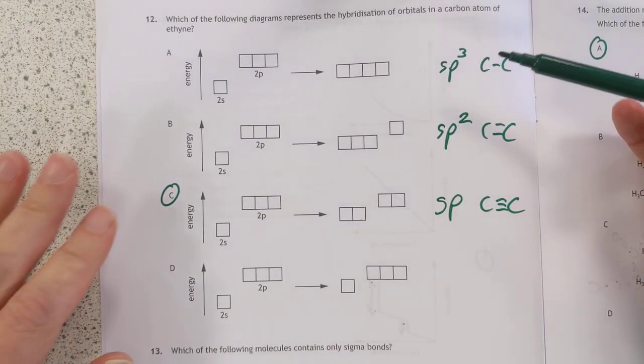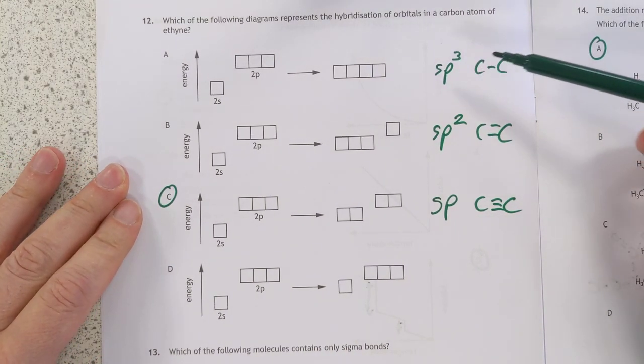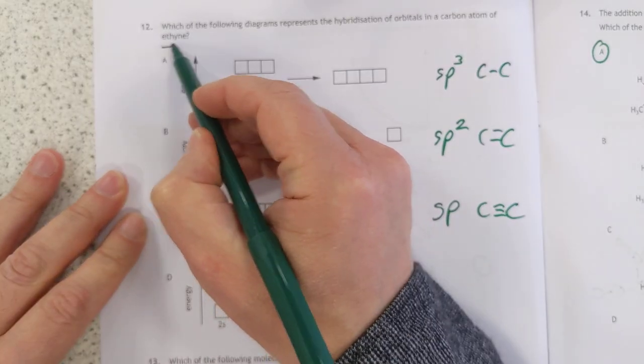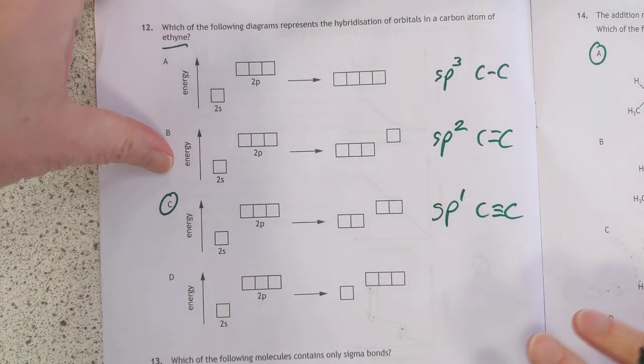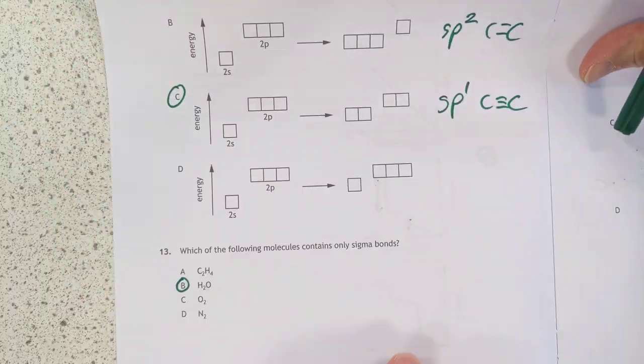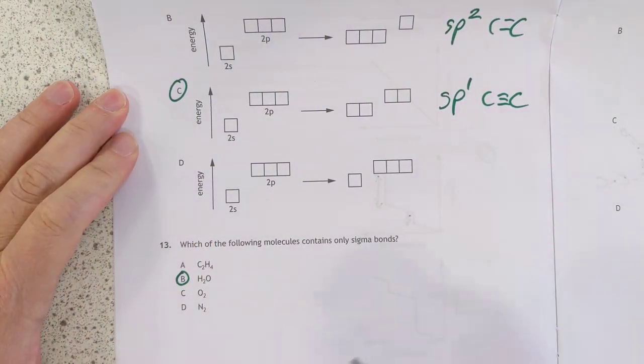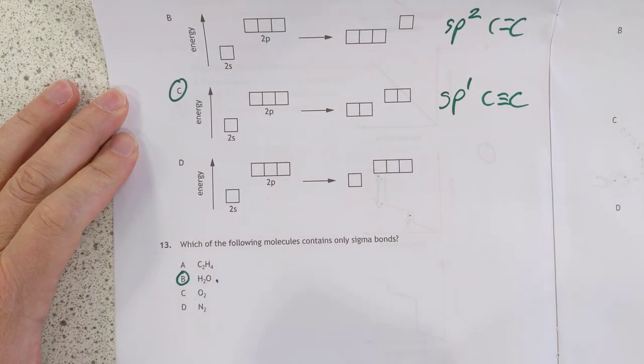Number 12. This is SP3 hybridization, which is single bonds, and we want ethyne. So, triple bonds. So, we're looking for C, which is SP1 hybridization. Number 13. Which molecule contains only sigma bonds? You've got to have single bonds only, which is water.